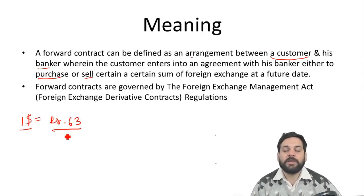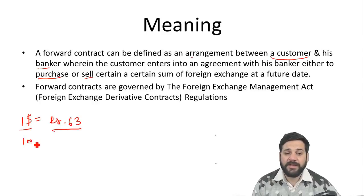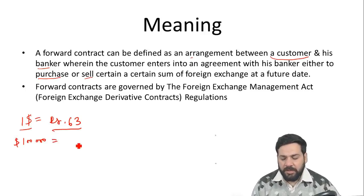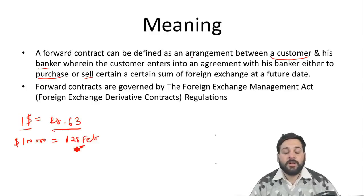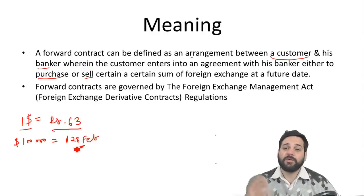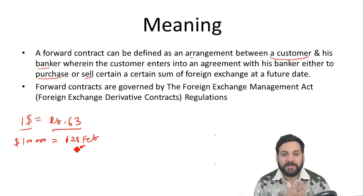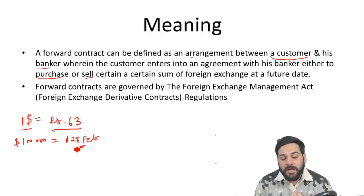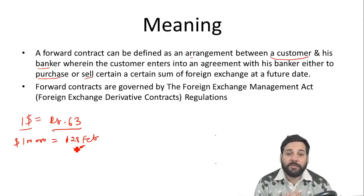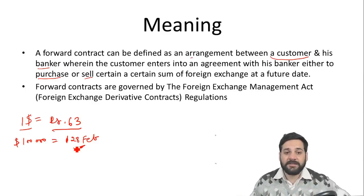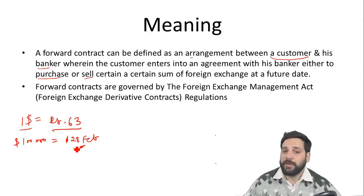Suppose Vardhaman made a sale today and they are going to receive 1 lakh dollars on 28th February. They are not going to take any risk, so they will go to their bank and enter into a forward contract. Their bank promises to buy the dollars on a specific date at a specific price. These forward contracts are governed by the Foreign Exchange Management Act — FEMA.